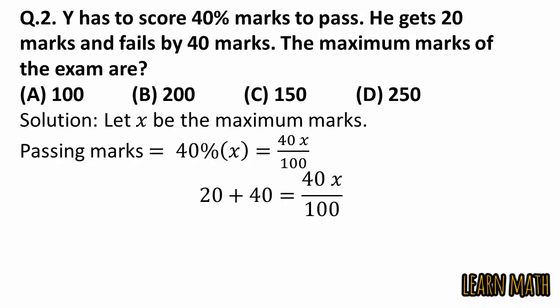So 60 is passing marks. But passing marks is equal to 40%, 40 by 100 into X. Simplify this, we will get this. Cancel this 0 with this, and 4 into 25 is 100. 25 into 6 is 150. So the correct option is option C.